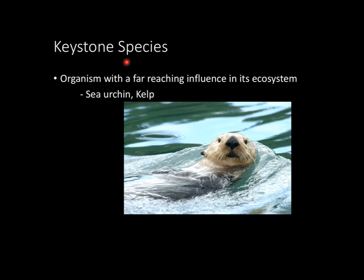Next, let's look at a keystone species. A keystone species is essentially an organism that has a very far-reaching influence within its ecosystem. A good example to remember is the sea otter. A sea otter feeds on sea urchin, so the sea urchin population stays at a reasonable level. However, if there was a decline in sea otter population, the sea urchin population would climb at the same rate, throwing everything off. The same relationship exists with kelp and sea otters as well. A keystone species is imperative to an ecosystem — the ecosystem really can't function without it.